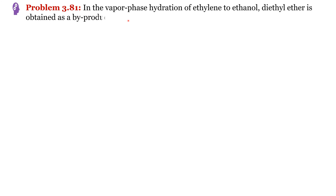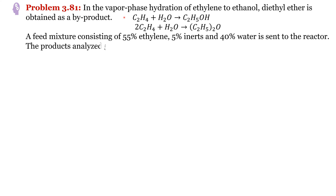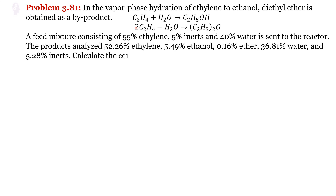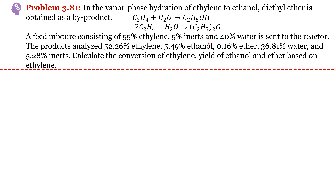Problem number 3.81: in the vapor phase hydration of ethylene to ethanol, diethyl ether is obtained as a byproduct. The first reaction is the desired reaction and the second is undesired. The feed mixture consists of ethylene, water, and inerts. Percentages of reactants are given, and the product contains certain percentages of ethylene, ethanol, ether, water, and inerts. We need to estimate the conversion of ethylene and yield of ethanol and ether based on ethylene. We can assume total moles of feed equal to 100.